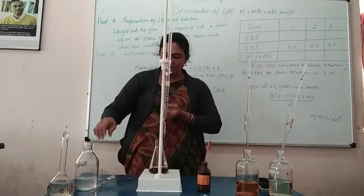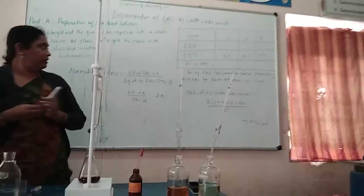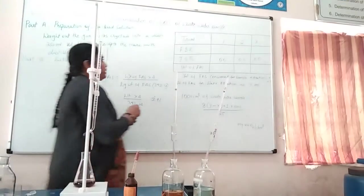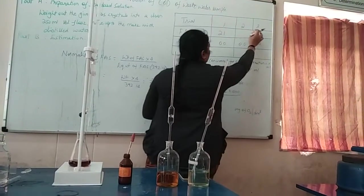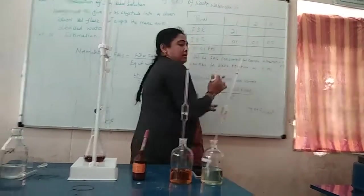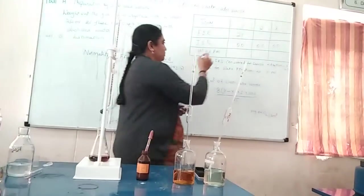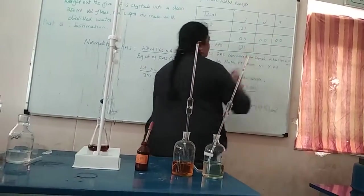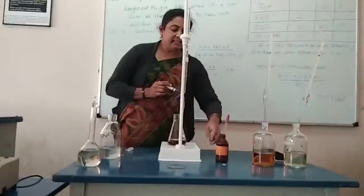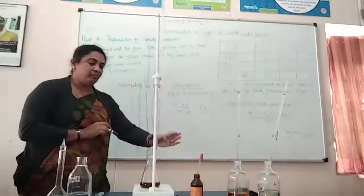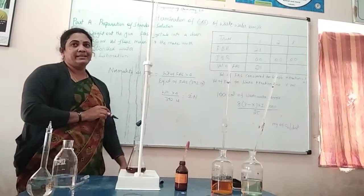I got around 21 ml. Note down the final burette reading — 21 ml. Trial 2 and trial 3 also should be done; you have to do 3 trials in total and obtain concordant readings.